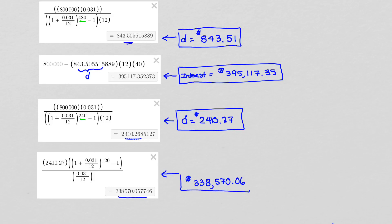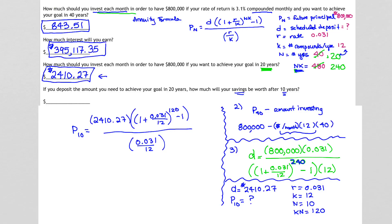That goes in our last answer box. If we deposit the money needed to achieve our goal in 20 years, our savings will be worth $338,570.06 after 10 years. That finishes our problem — it was a long one! Please reach out if you have any questions, or rewatch this video if any part is unclear.